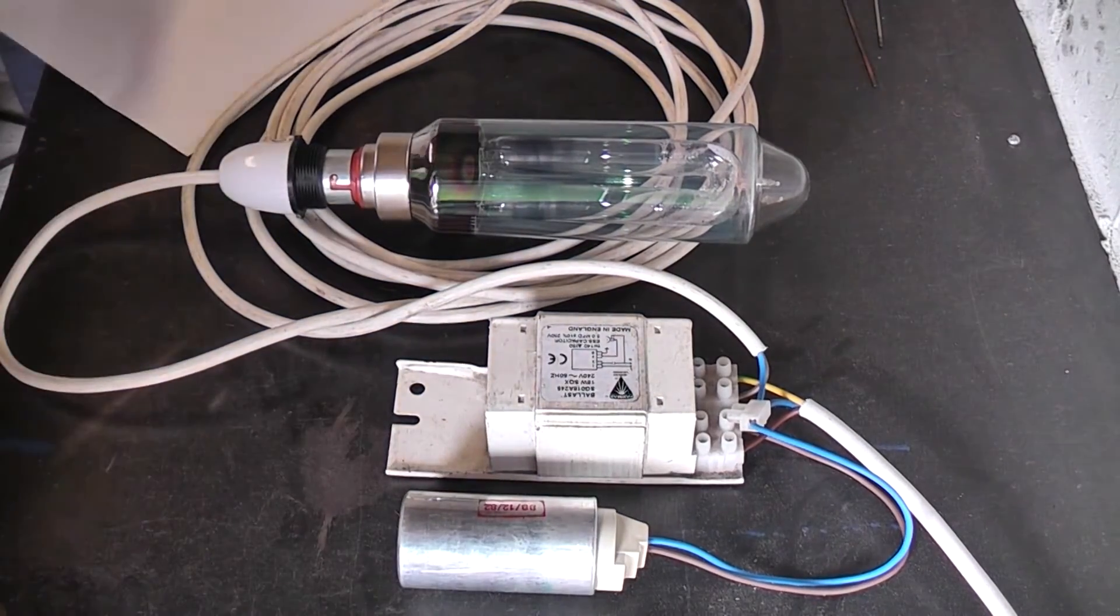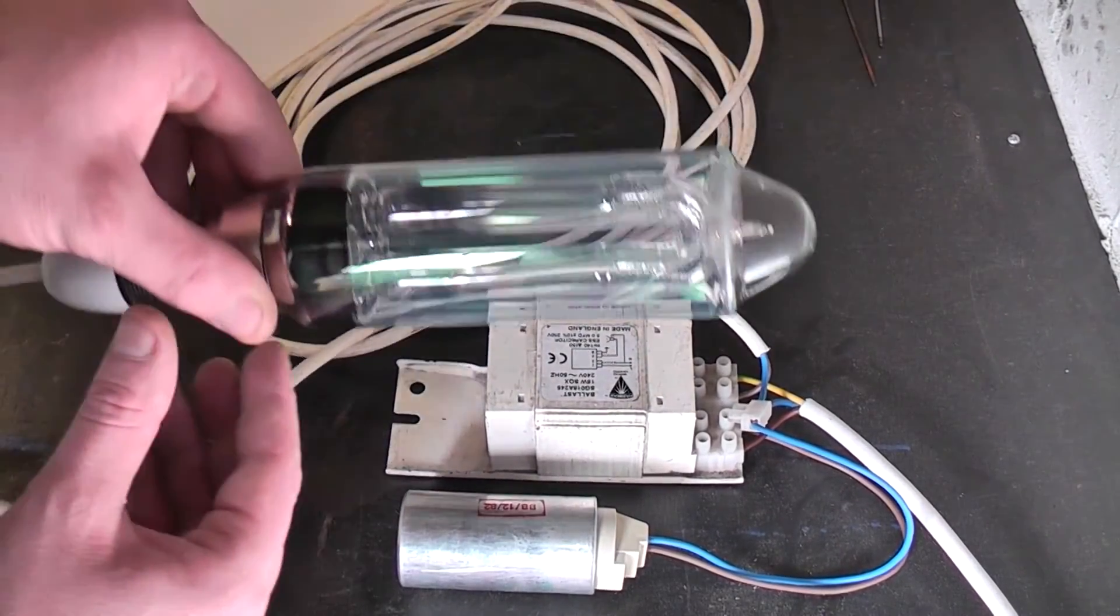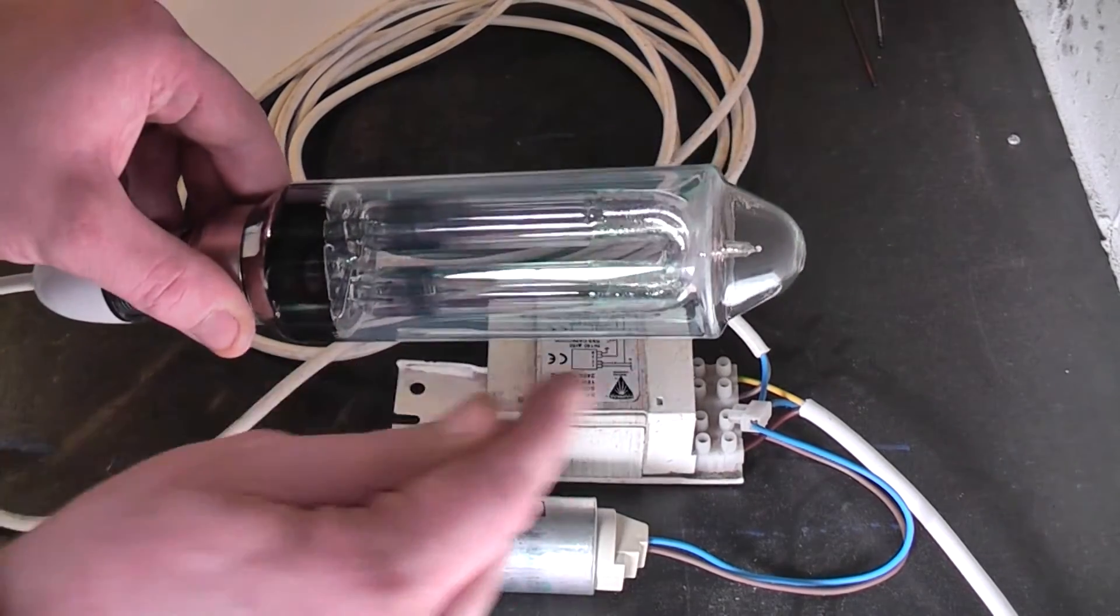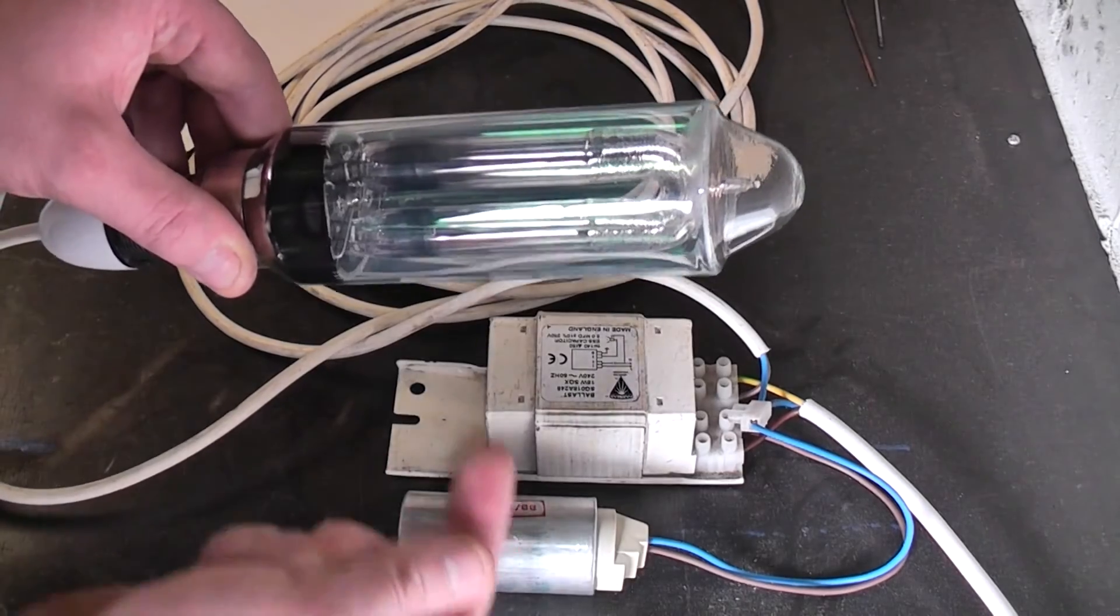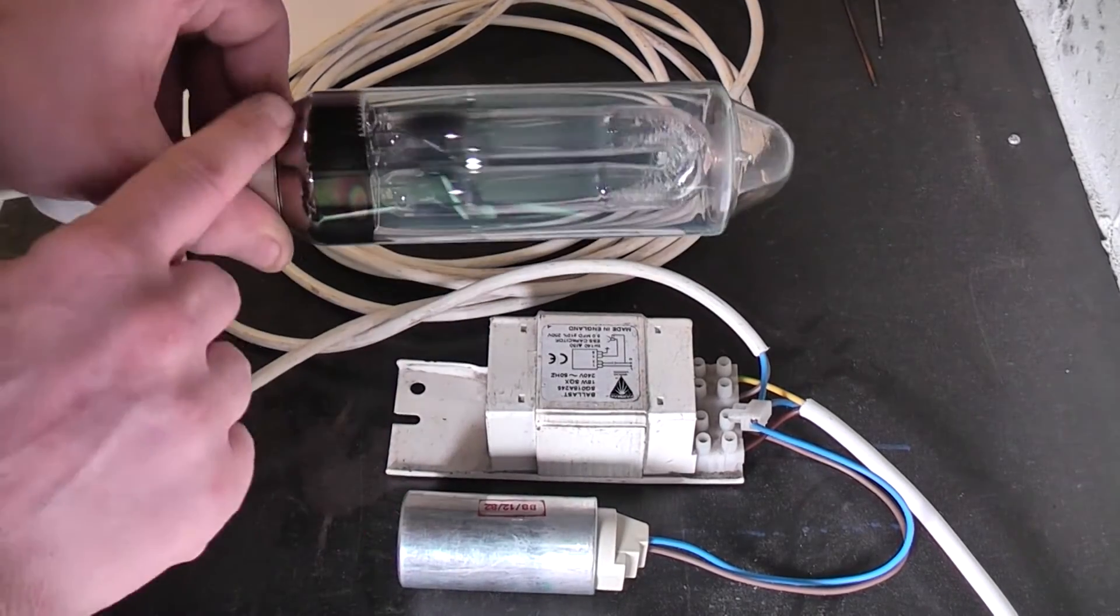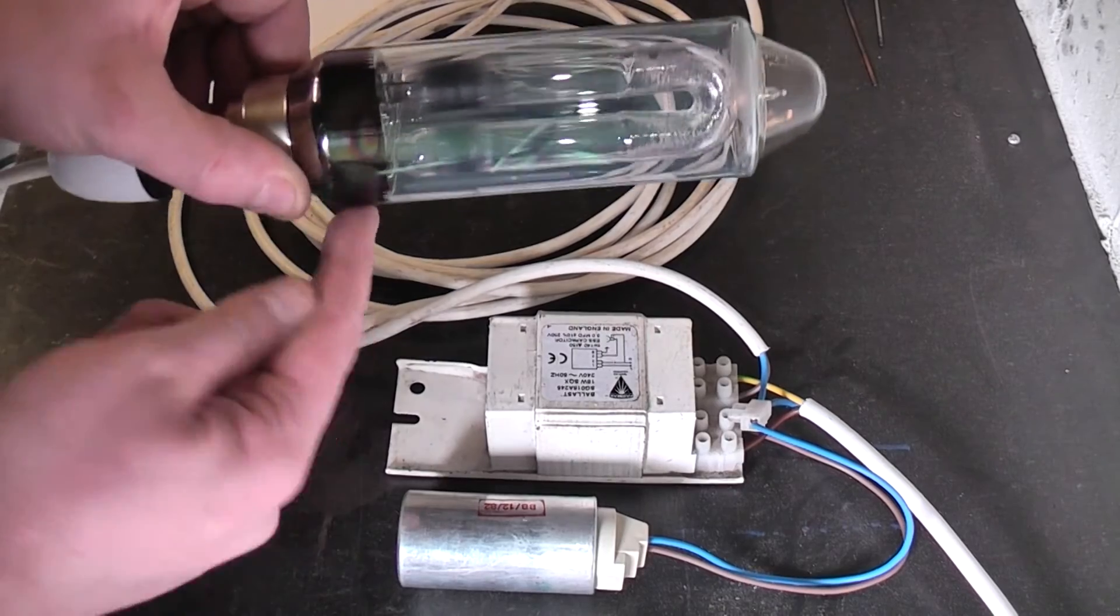The lamp itself consists of a u-shaped arc tube which is actually quite big, it's almost like a clear fluorescent tube bent in two.